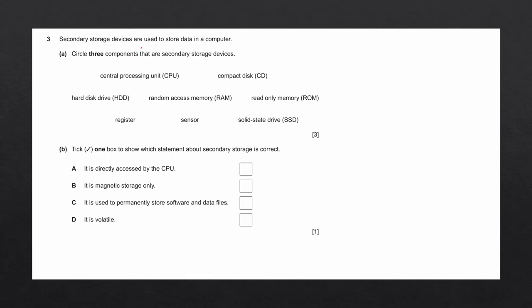Question 3. Secondary storage devices are used to store data in a computer. Question A says circle three components that are secondary storage devices. We can eliminate non-secondary storage devices: a CPU is not a storage device; a sensor is not a storage device; a register is temporary memory on the CPU; RAM is volatile and not secondary storage; and ROM is classified as primary memory. This leaves us with three options: the compact disk, the hard disk drive, and the solid state drive.